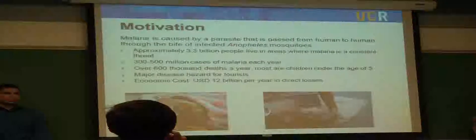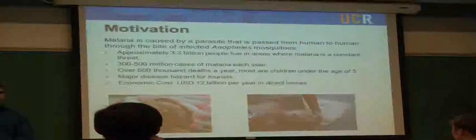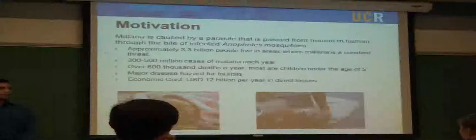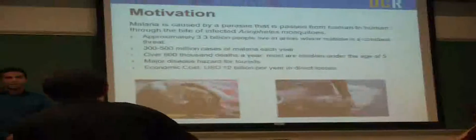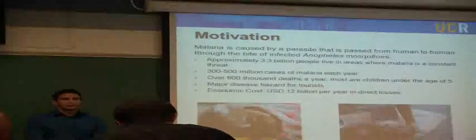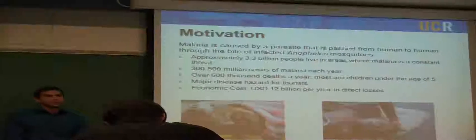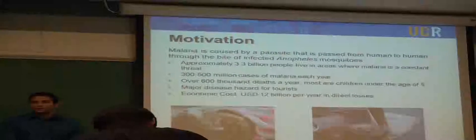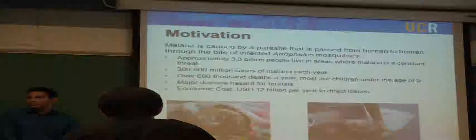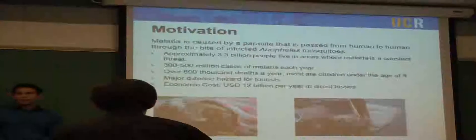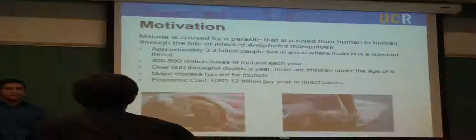First let's talk about our motivation. Malaria is a very common disease. It's a constant threat to approximately 3.3 billion people all around the world. There's about 300 to 500 million cases per year. Over 600,000 of these cases end up in death, and most of those deaths are for children under the age of 5. It's also a major disease hazard for tourists that come to those areas, and there's a great economic cost, 12 billion USD per year.